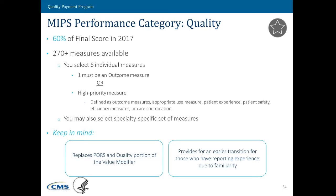Quality counts for 60% of your final score. Your final score will be a number that ranges from 0 to 100. You want to ensure that your final score is above the number 3. If your final score is above 3, that means you will not be getting a penalty, and you would be getting a slight or potentially higher bonus, depending upon where you rank between that 3 to 100 scale.